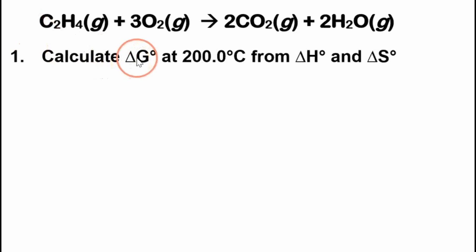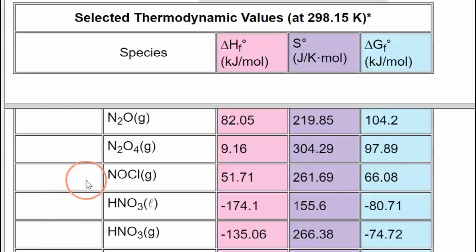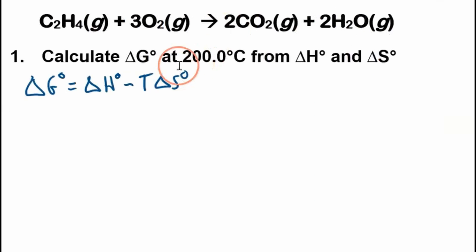For this first one, we'll calculate the Gibbs free energy change of the reaction from enthalpy and entropy changes. To do that, we need to use the Gibbs free energy equation, so the change in standard Gibbs free energy is equal to the change in the standard enthalpy minus temperature times the change in entropy. This is of the reaction.